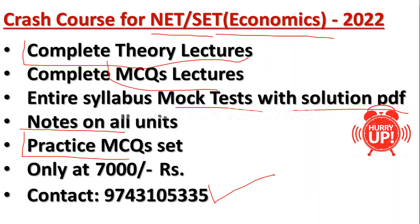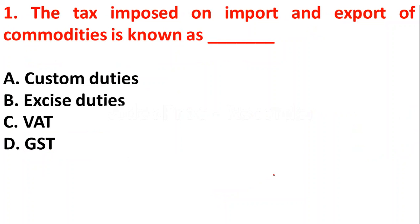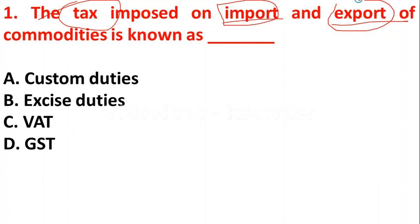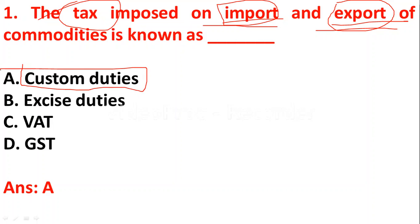The first question: the tax imposed on import and export of commodities is known as — option A: custom duties, option B: excise duties, option C: VAT (value added tax), option D: GST (goods and service tax). Whenever the government imposes tax on imports and exports of commodities, it is known as custom duties. So option A is the right answer.